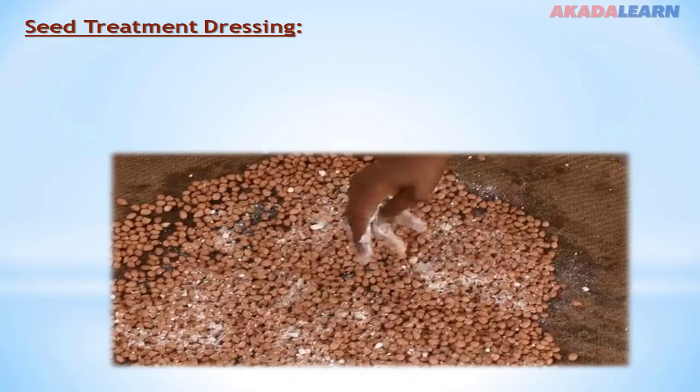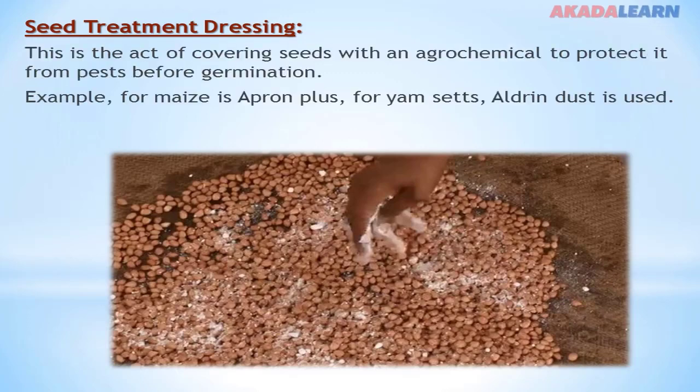Seed treatment or dressing. This is the act of covering seed with an agrochemical to protect it from pests before germination. For example, for maize we use Apron Plus. For yam setts, Aldrin dust is used.